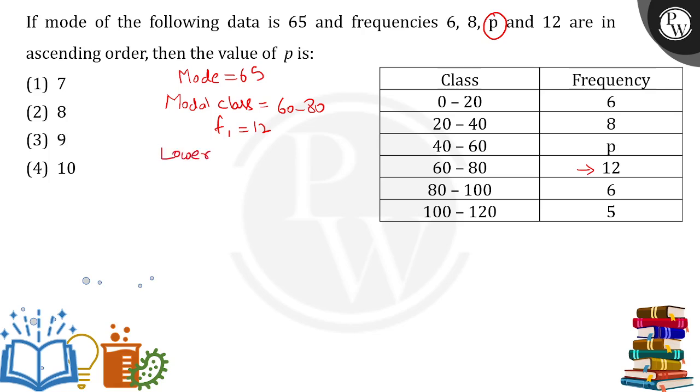Now we can put up the values in the formula. Lower limit here is simply 60. Now frequency of the class preceding the modal class - that is what we need to find out over here.